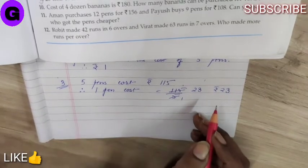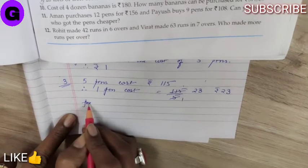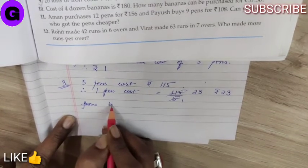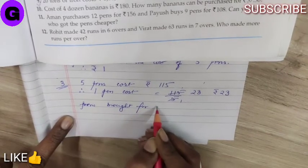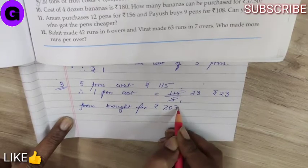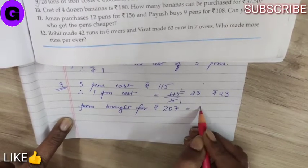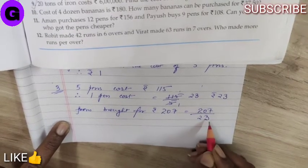the cost of 1 pen. Now, pens bought for rupees 207 is equal to 207 by 23.